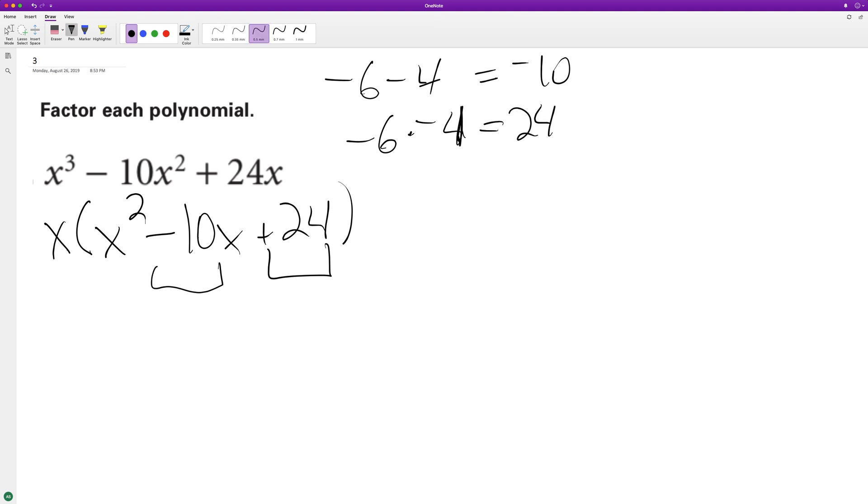There you go. So we have X quantity X minus, not plus, minus 4 and X minus 6. So here's our fully factored form, but let's go ahead and check just to make sure.